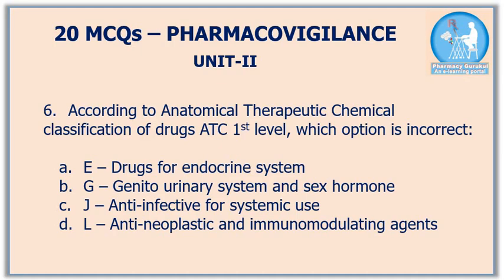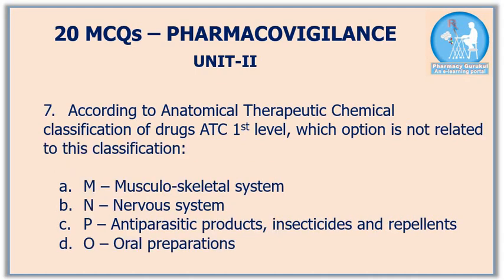These are the first level, second level, third level, fourth level, and fifth level. Question number 6: according to ATC classification of drugs, ATC first level — which option is incorrect? Option A is incorrect because alphabetical letter E is not included in this classification. Question number 7: according to ATC classification of drugs, ATC first level — which option is not related to this classification? The correct answer is option D; oral preparation is not included in this classification.